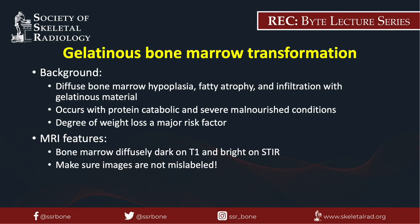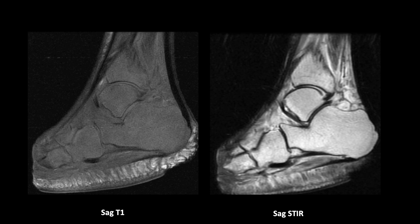Gelatinous bone marrow transformation, or serous atrophy of the bone marrow, is a phenomenon in which the bone marrow becomes hypoplastic and undergoes infiltration with gelatinous material. Risk factors include severe protein catabolic and malnourished states, for example in patients with anorexia, AIDS, long-standing alcohol use, and severe systemic illness. On MRI, the bone marrow appears diffusely hypointense on T1-weighted sequences and hyperintense on STIR sequences — the extent of abnormality is so extensive that the T1 sequence looks like a STIR sequence and vice versa. Here's an ankle MRI of a patient with severe malnutrition demonstrating this exact opposite appearance of normal bone marrow.